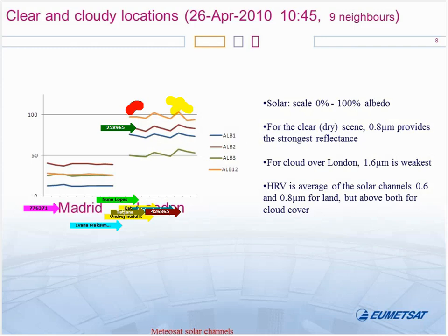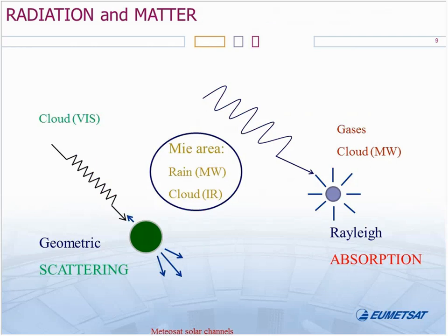London has cloud, Madrid is clear. We could say many more things out of the differences between the two channels — 0.6 channel 1 and 0.8 channel 2. You see the difference between the two lines, blue and brown, is bigger for any kind of ground than for cloud. The essential parameter for reflectivity analysis is the size — the size of the particles which interact with the radiation — measured compared with the wavelength.